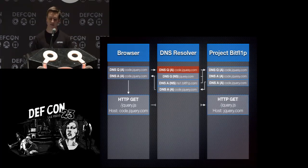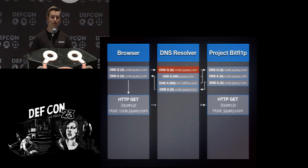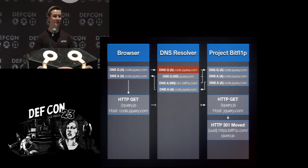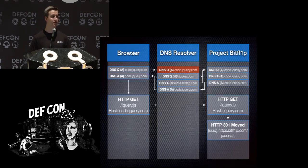The DNS resolver sends the result back to the browser, which issues an HTTP GET request. Those two different answers had different IP addresses, which allows us to determine which type of bit flip occurs most commonly, since the HTTP GET will target a different IP depending on which answer the DNS resolver accepted. This GET request goes to the Project Bit Flip server, and instead of just answering with a 404 or 200, we send back a 301 Moved Permanently, which permanently caches the bit flip in the browser's cache so subsequent page loads are directed to us even without a new bit flip.